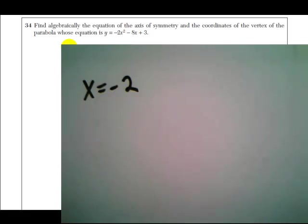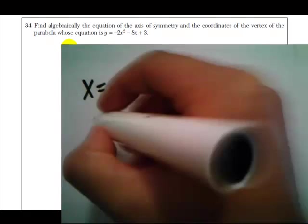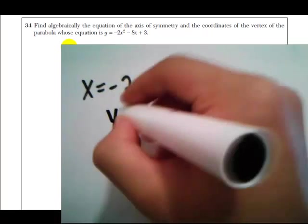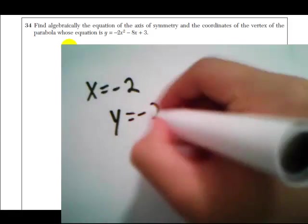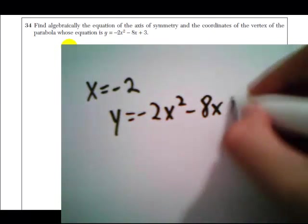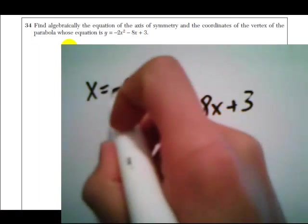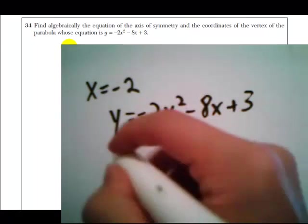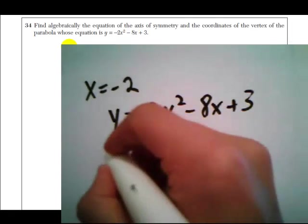Now, the vertex is on the axis of symmetry. So we already know the x coordinate of the vertex. All we have to do is find the y coordinate. Since we have the equation of the parabola, y equals negative 2x squared minus 8x plus 3, all we're going to do is plug in a value of negative 2 for x and see what we come up with for y.